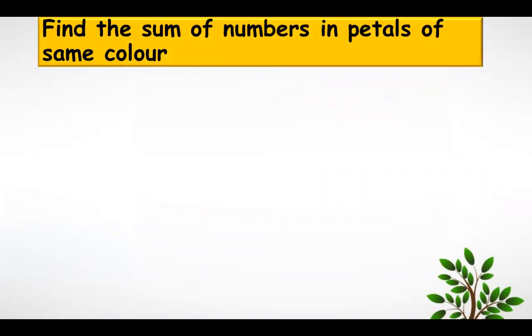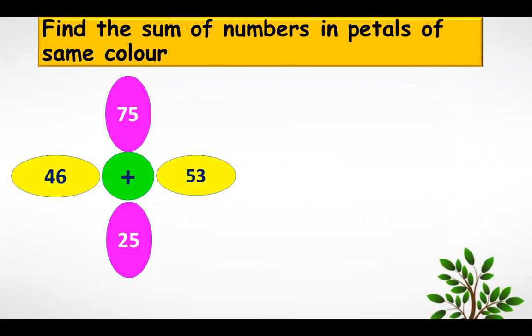Find the sum of numbers in petals of same color. Here you need to add these two numbers together to get their sum. 75 plus 25, then 46 plus 53. Let's check. The sum of 75 plus 25 is 100 and 46 plus 53 is 99.